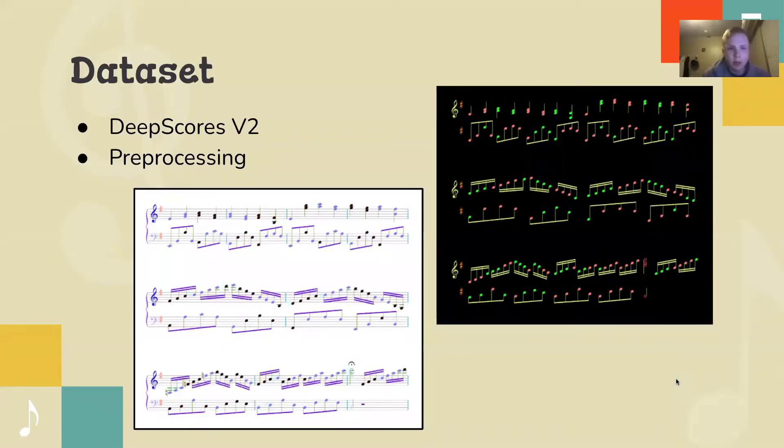So for the dataset, we decided to use Deep Scores, which has about 80 gigabytes of music. We only ended up using one. But on the left, you can see some examples of what Deep Scores looks like. We ended up having some filters on this to reduce the amount of symbols to just have 12 very common ones. You can see on the right our final results with that.